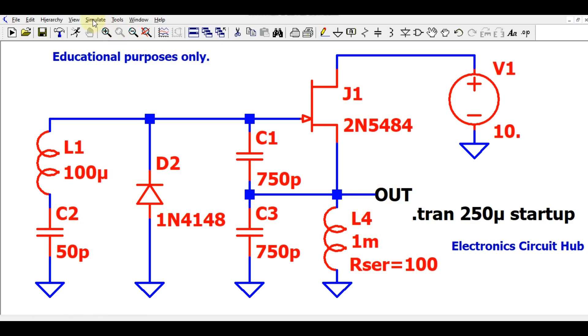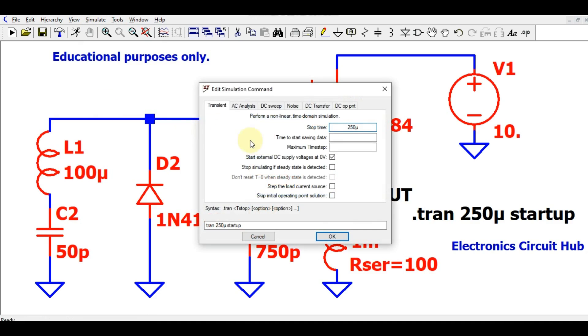You have to go to the simulate button, edit simulation command, and you can see the stop time for this simulation is 250 microseconds. You can see here the start external DC voltage at 0 voltage ticked for startup.